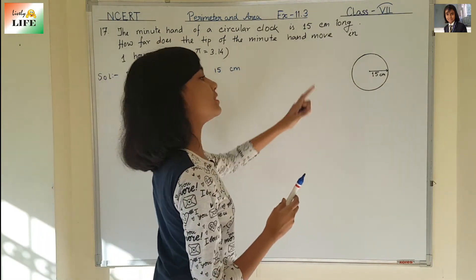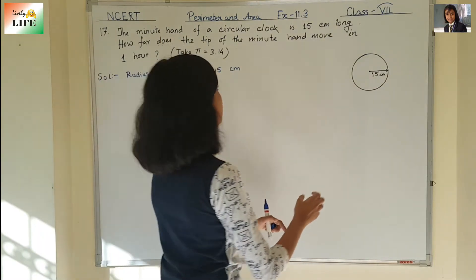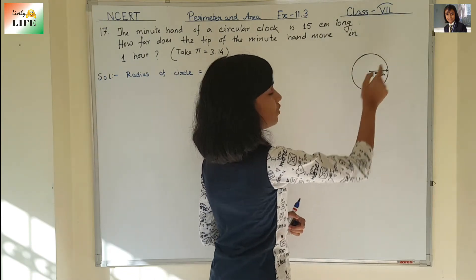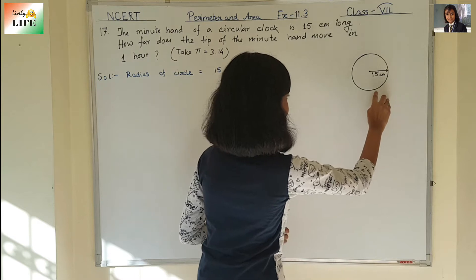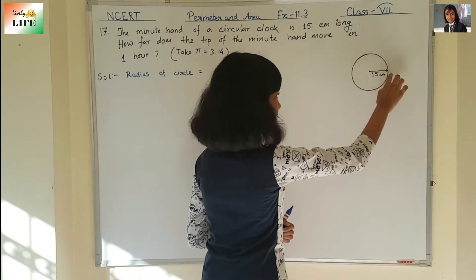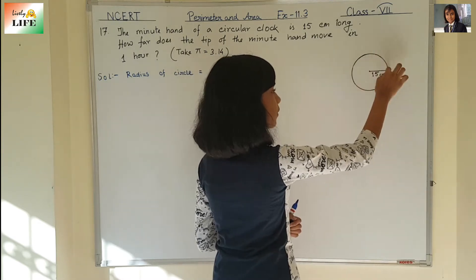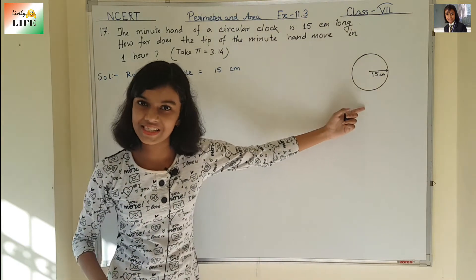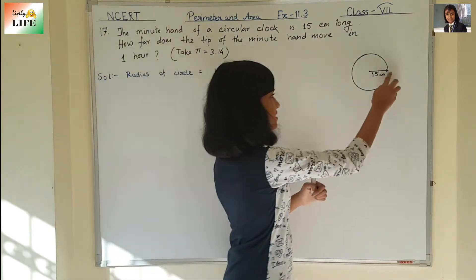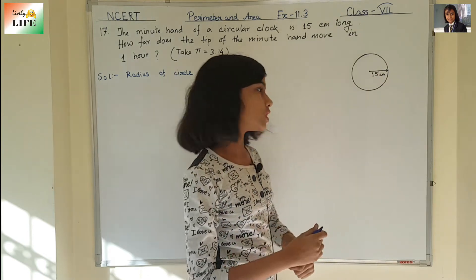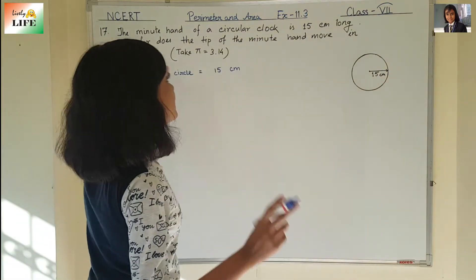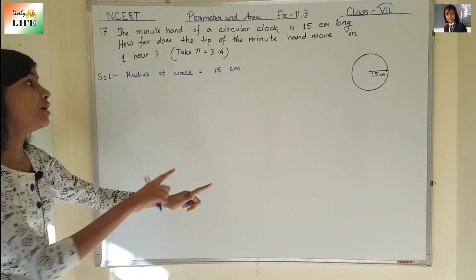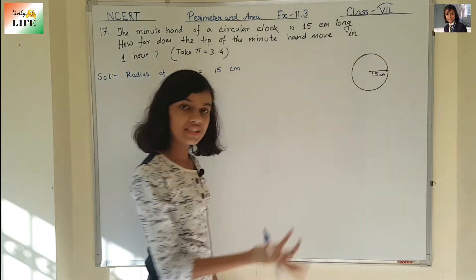We need to find out how far the tip of the minute hand moves. If it takes a complete round, what is the distance? This is the distance — one complete round. This is the circumference of the circle, the perimeter of the circle. So the distance travelled by the tip of the minute hand in one hour is the circumference of the circle.